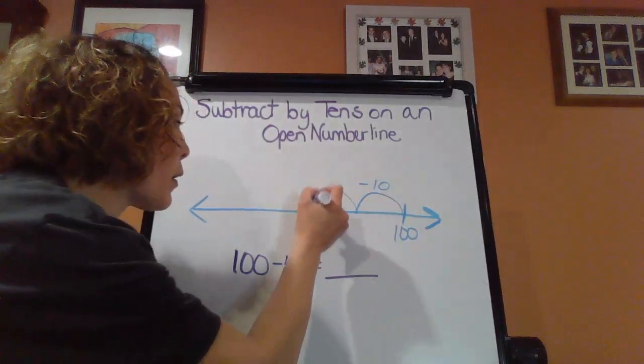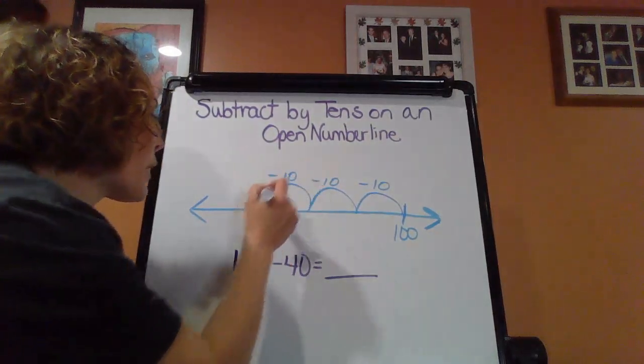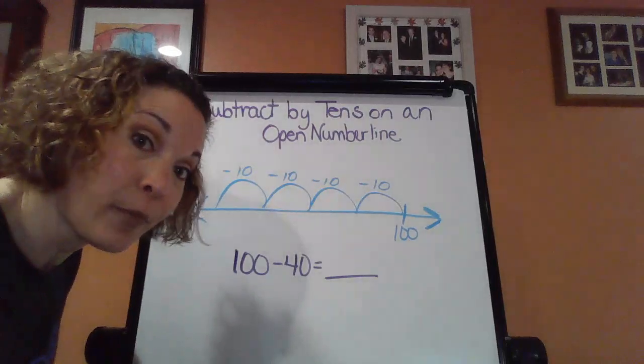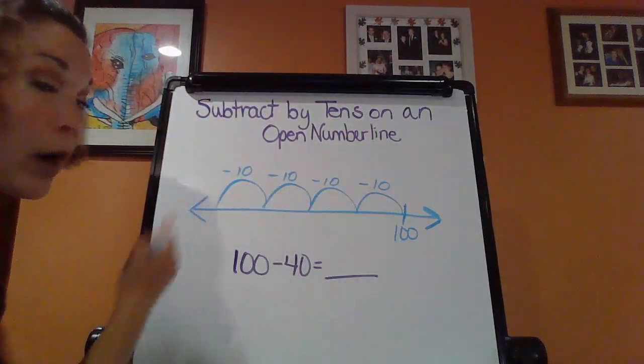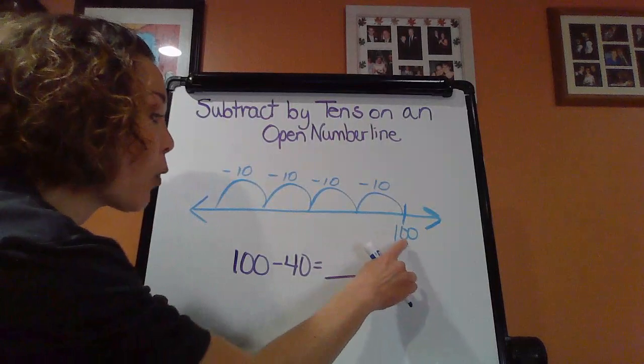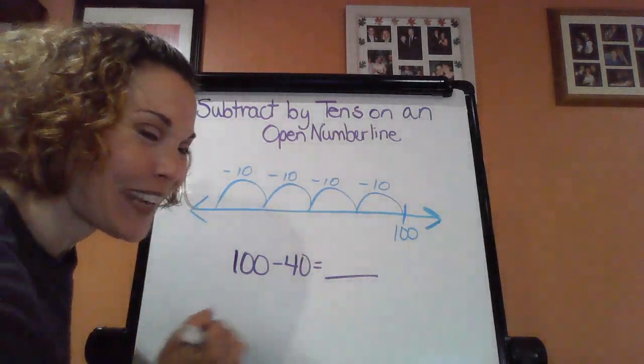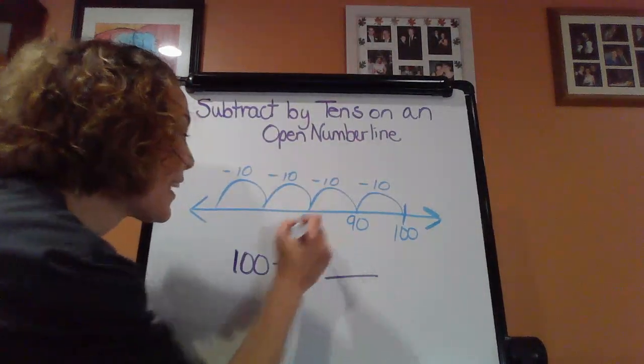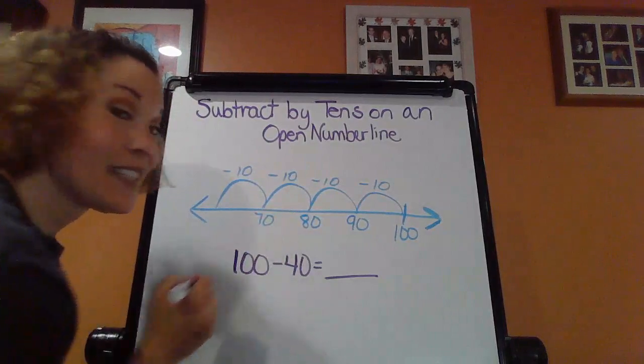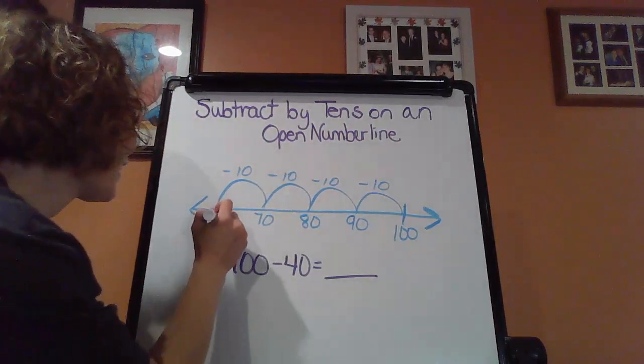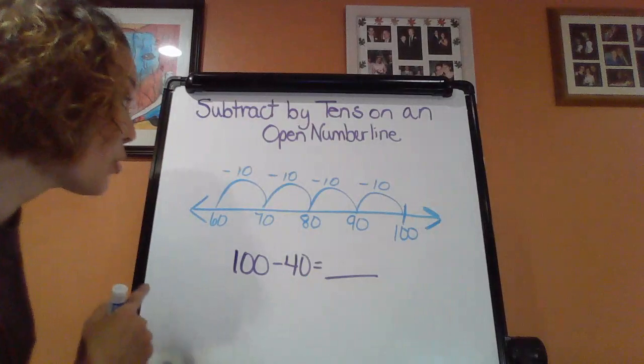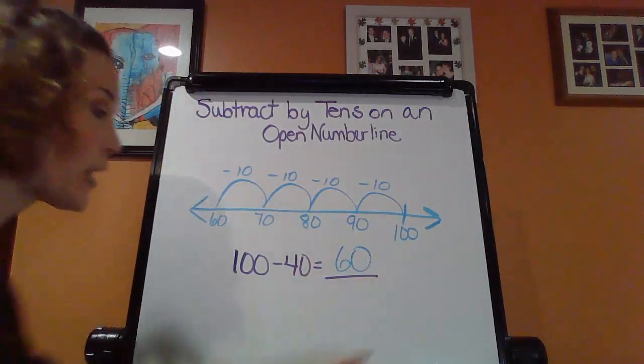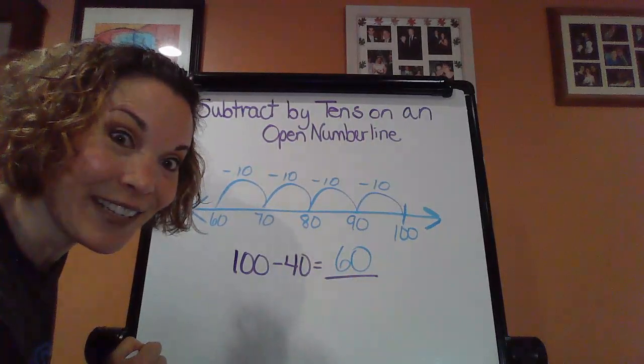One, two, three, and four. So now we got to start counting back here because we're showing what we have to count back. So now 100. I'll count back with me. 90, 80, 70, and 60. So your answer here, 100 minus 40, it's going to give me a difference of 60.